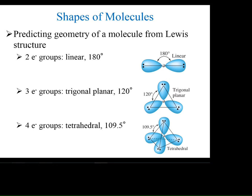To summarize: two electron groups gives linear geometry; three electron groups gives trigonal planar; four electron groups gives tetrahedral. Trigonal planar is a triangle — 'trigonal' — and it's flat, all in one plane — 'planar.' Tetrahedral has four sides: a bottom and three faces around it, making four total.